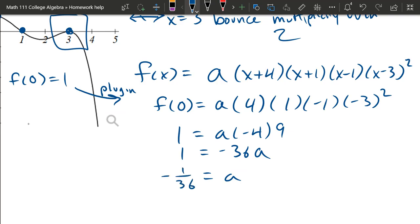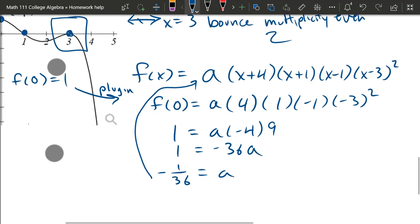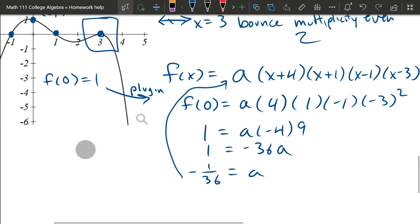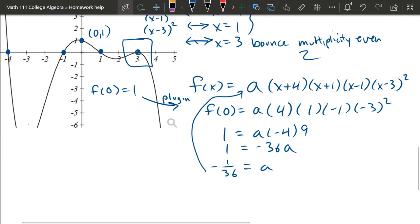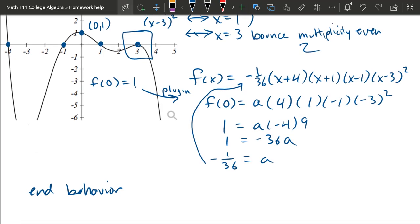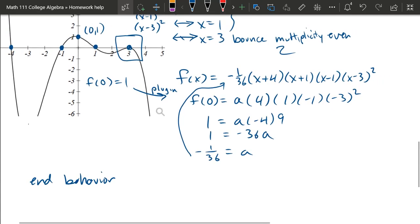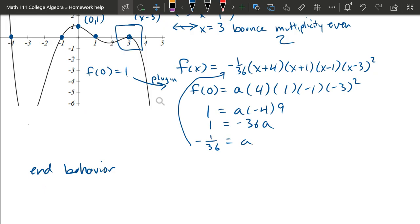Once we have that number, we're going to substitute it in for a right there, and that's going to be our polynomial from the graph. Now I recommend that you also check the end behavior just to be safe. So if you're on a quiz or a test, you don't want to make a mistake.